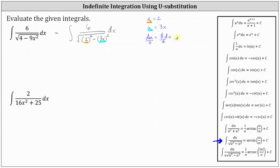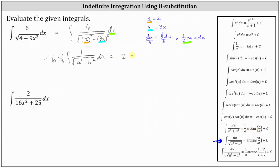Simplifying, we have one-third du equals dx. Now we can substitute one-third du for dx and factor out the six. Bringing this in terms of u, we factor out the six, dx equals one-third du, factor out the one-third, and we have du. The integrated function is now just one divided by the square root of the quantity a squared minus u squared, a perfect match for the integration formula. Simplifying and applying the formula, six times one-third is two, giving us two times arc sine of u divided by a, which is 3x divided by two plus c. This is the anti-derivative, or indefinite integral, which we often label big F of x.